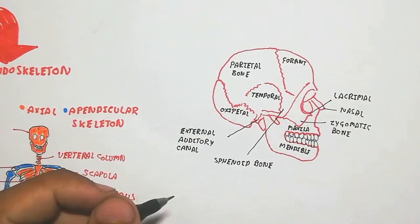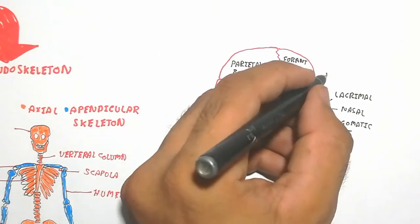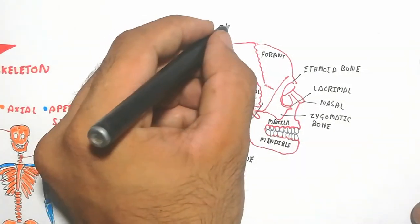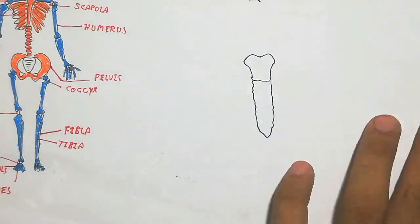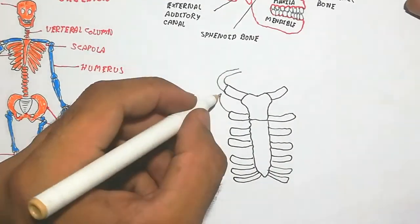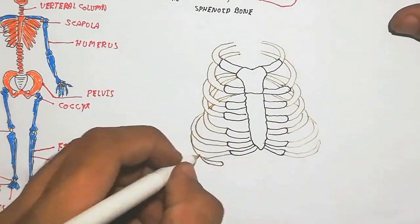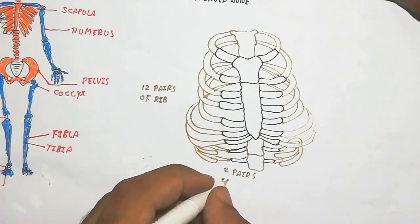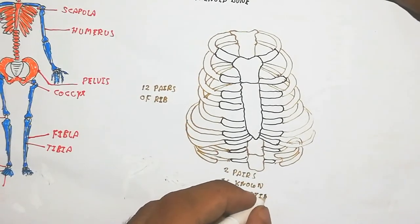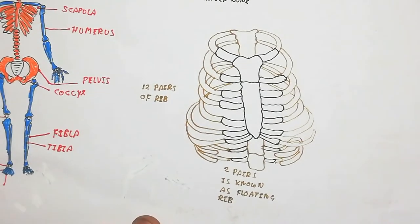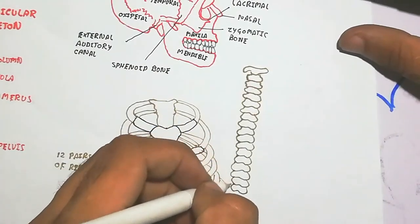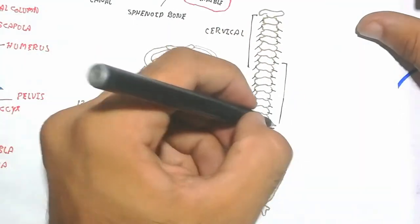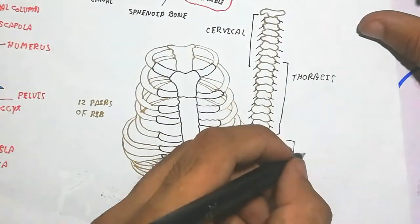The zygomatic bone, nasal bone, and sphenoid bone can be seen in the figure. The ribs are composed with the sternum; the sternum attaches to the ribs. Two pairs of ribs do not attach to the sternum — these are known as floating ribs. There are 12 pairs of ribs in the human being; the sternum attaches to 10 pairs. The vertebral column is composed of cervical, thoracic, lumbar, sacral, and coccyx regions.